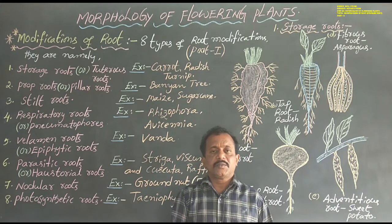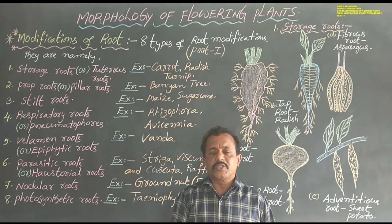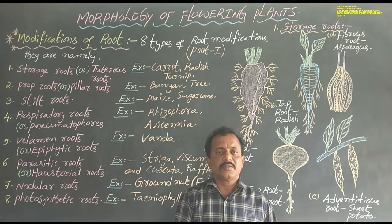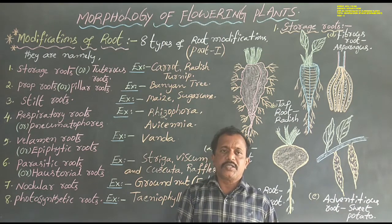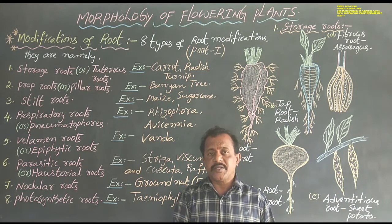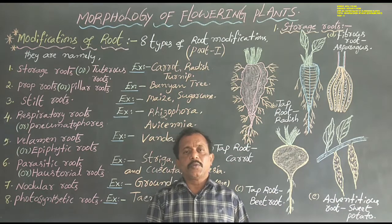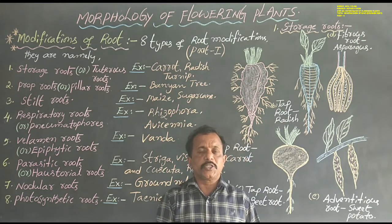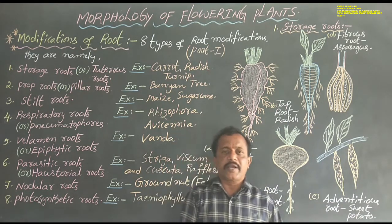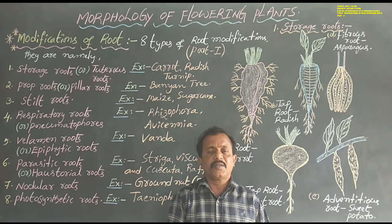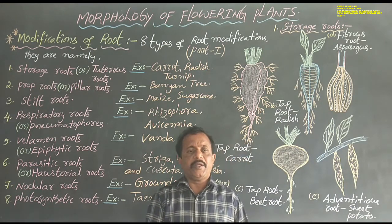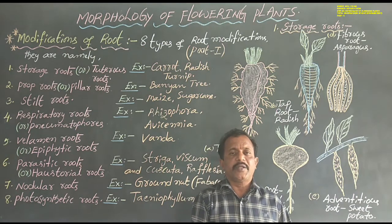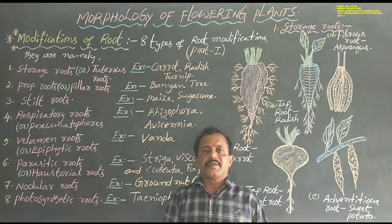So dear students, most of the years this question is asked in the IPE pattern — that is an 8-mark question or a long-answer type of question. This question is very very important. That is: define root modification, explain how root systems are modified to perform different types of functions, or another type — define root systems, how many types of root systems, how many types of root modifications are present in angiospermic plants, write any 6 root modifications.